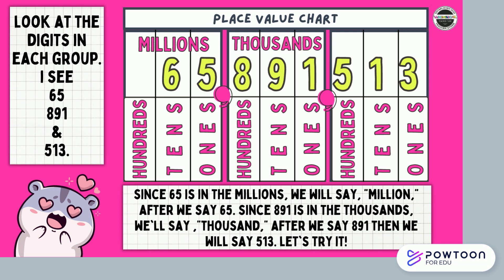Look at the digits in each group — I see 65, 891, and 513. Since 65 is in the millions, we will say million after we say 65. Since 891 is in the thousands, we will say thousand after we say 891. Then we will say 513. Let's try it: 65,891,513.